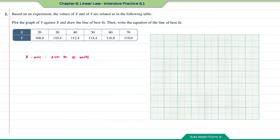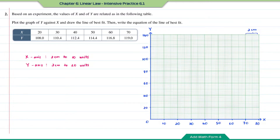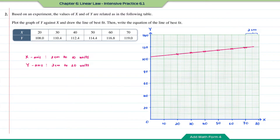For the y-axis I'm going to use 2 cm to 20 units. Now let us draw the scale, transfer the data from the table onto the graph, and draw the line of best fit. This is how the graph of y against x looks like.